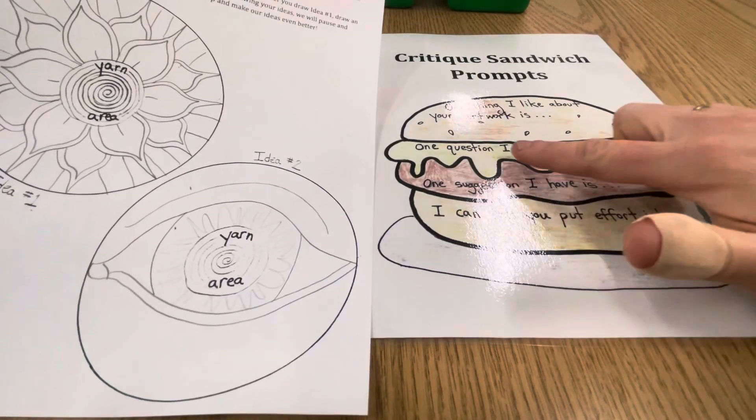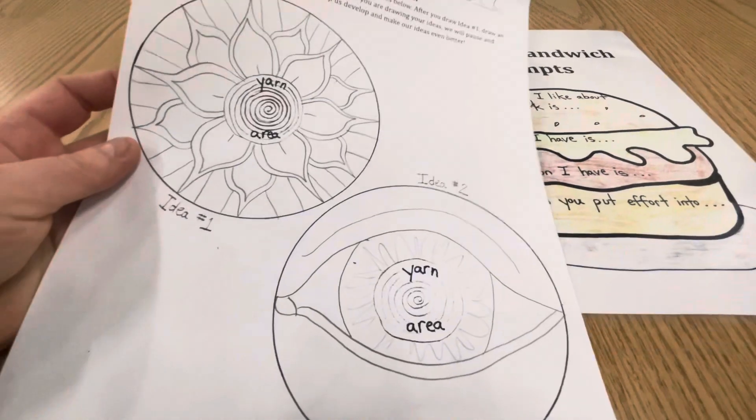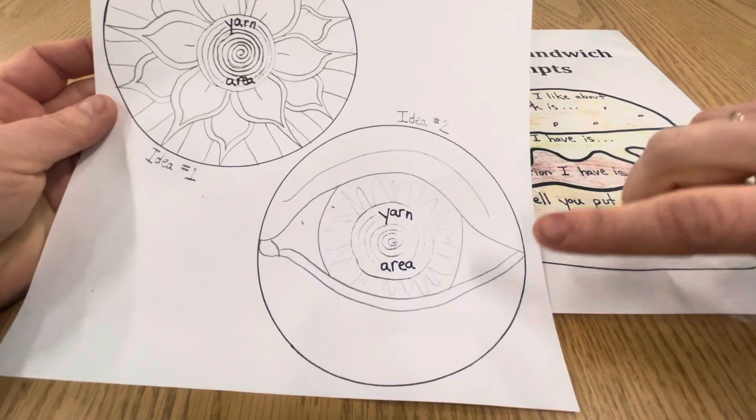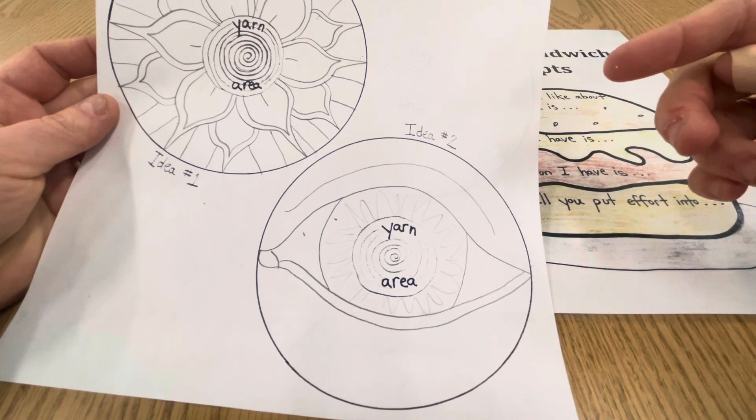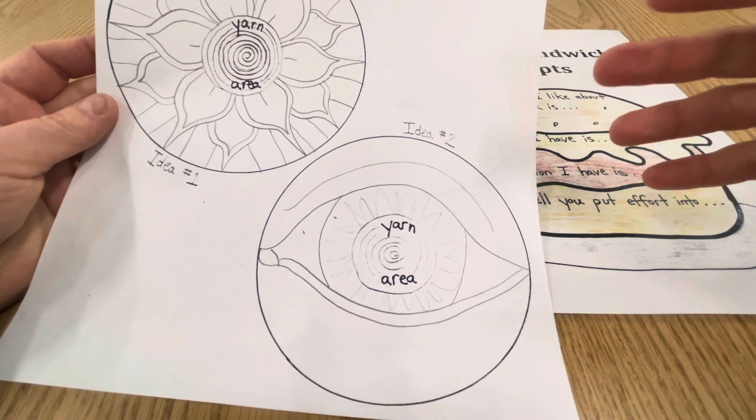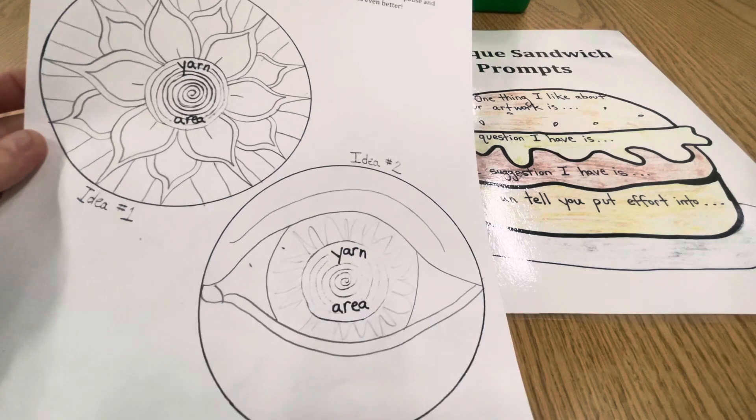Then it says one question I have is, what's a question that they might have? They might ask me, are you finished with the eye? It looks like you might not be done. Is there something else you're going to add? And then I would be able to answer that question.